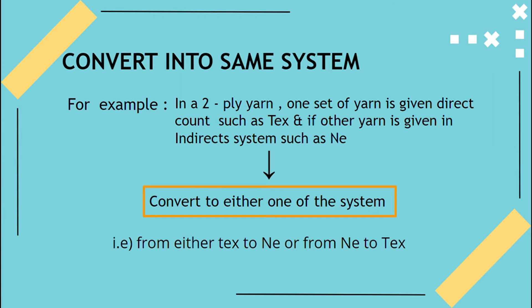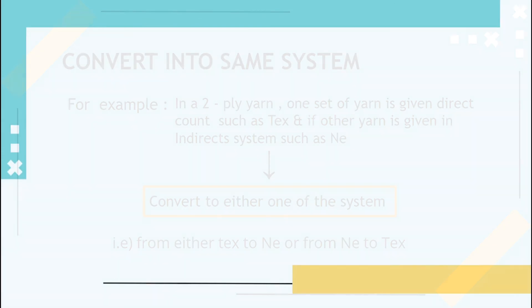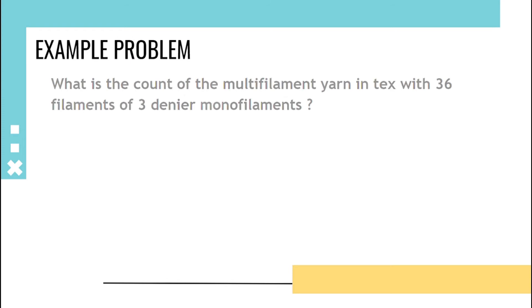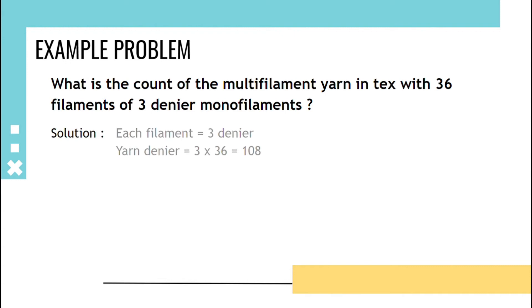The example problem is: what is the count of a multifilament yarn in Tex with 36 filaments of 3 Denier monofilaments? The solution is: we know that filament denier is 3, so the yarn denier